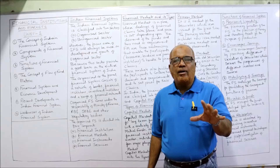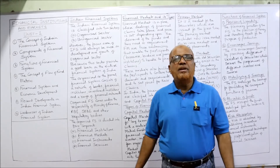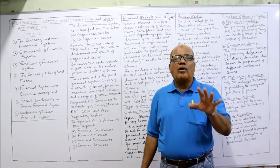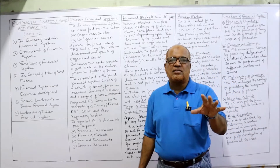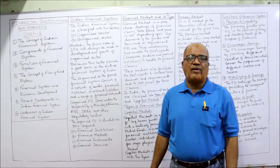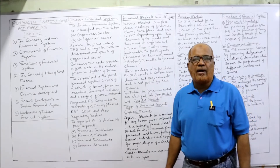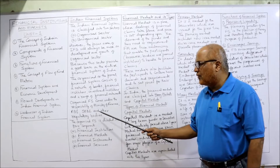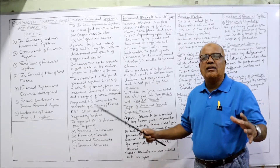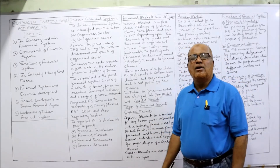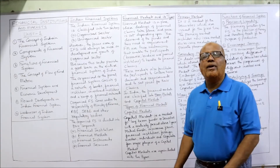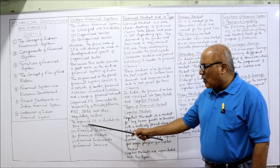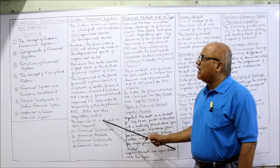The main regulatory bodies are: first, the Ministry of Finance, which controls the complete organized financial sector; second, the RBI — Reserve Bank of India; third, SEBI — Securities and Exchange Board of India; and many other regulatory bodies that govern the complete organized sector of the financial system.